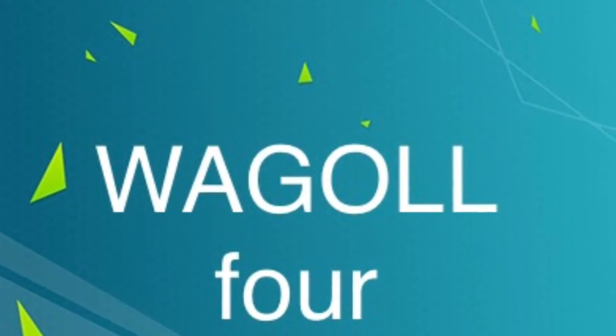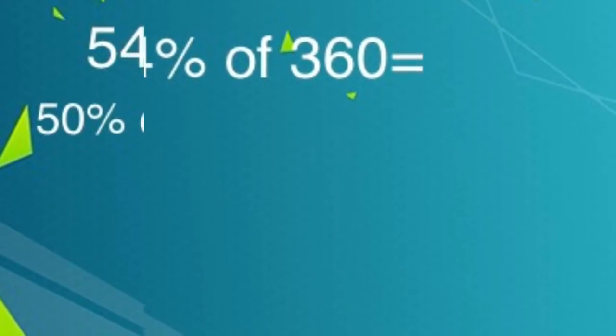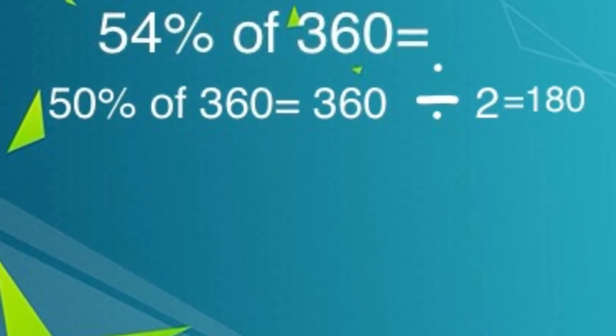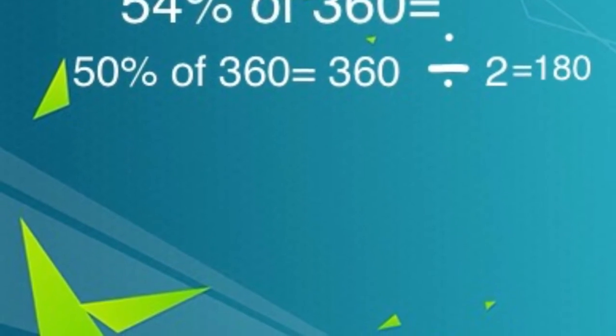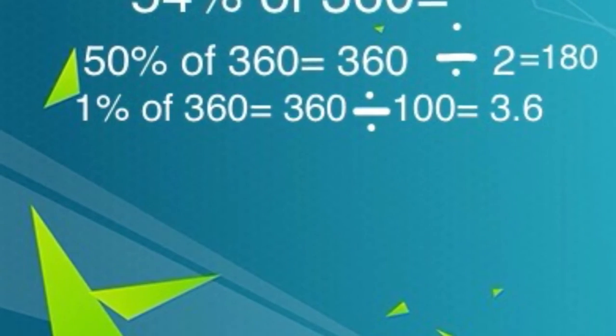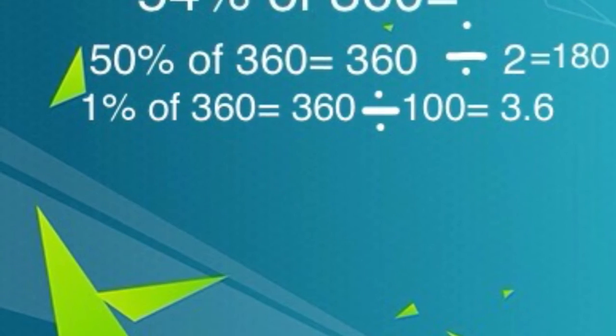Waggle 4. 54% of 360. 50% of 360 equals 360 divided by 2 equals 180. 1% of 360 equals 360 divided by 100 equals 3.6.